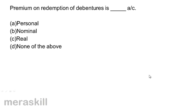Premium on redemption of debentures is a — account. A. Personal  B. Nominal  C. Real  D. None of the above. Premium on redemption of debentures has to be paid to the debenture holders and it is therefore a personal account. Correct answer: A, personal.